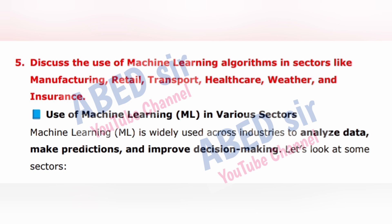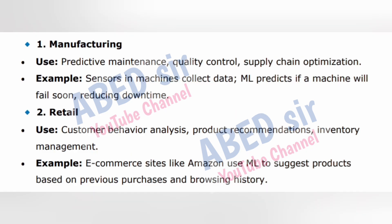Next important long question is 5: Discuss the use of machine learning algorithms in sectors like manufacturing, retail, transport, healthcare, weather, and insurance. Machine learning (ML) is widely used across industries to analyze data, make predictions, and improve decision making. Sector 1 — Manufacturing: uses predictive maintenance, quality control, supply chain optimization. Example: sensors in machines collect data, ML predicts if a machine will fail soon, reducing downtime.